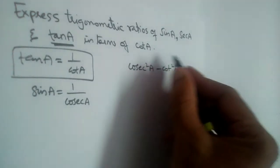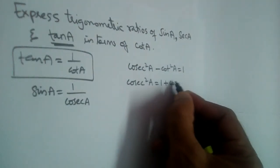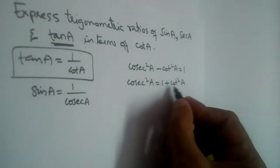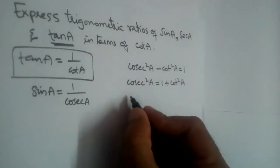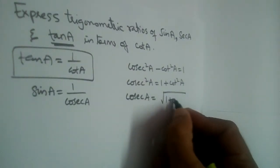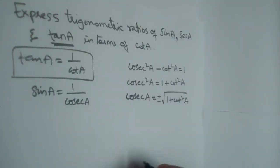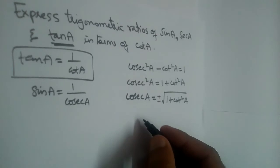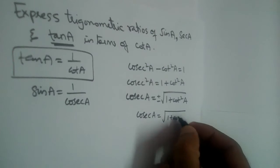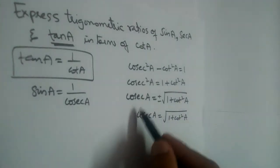If we send cot to the other side, cosecant square A will be 1 plus cot square A. So cosecant will equal root 1 plus cot square A. This will be plus minus, but since A is an acute angle, we'll take the positive value, because for less than 90 degrees we don't have any negative values of trigonometric ratios.